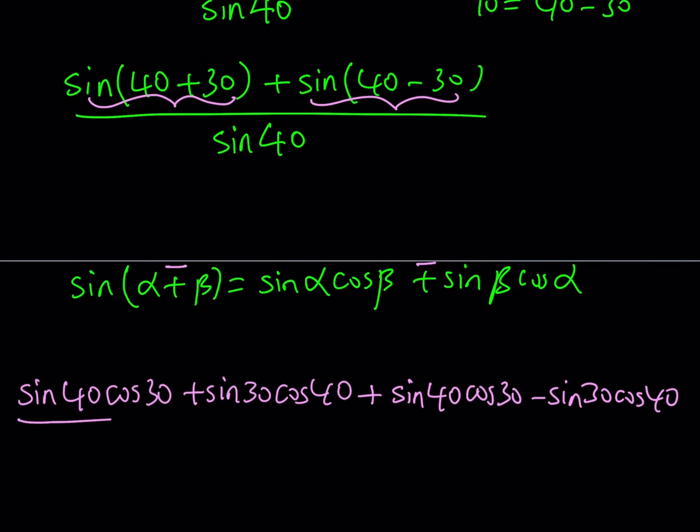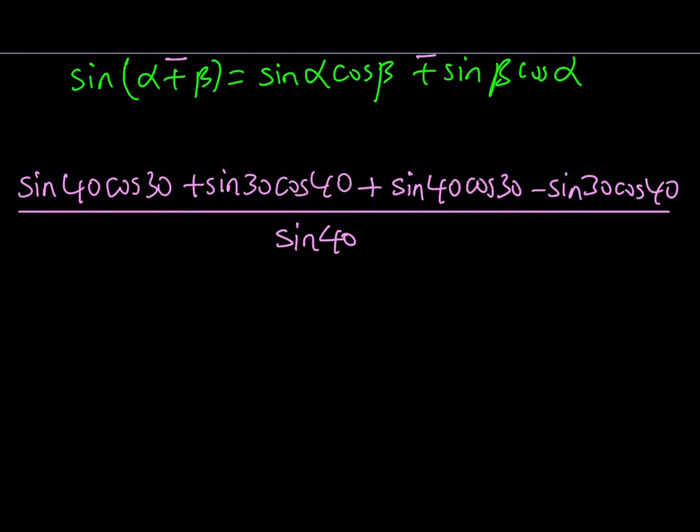And all of this is going to be divided by the expression, the denominator, which is sine 40. Let's go ahead and simplify this. Notice that sine 30 cosine 40, the product, and negative sine 30 cosine 40 are opposite, so they're going to cancel out. Let's cross them out.